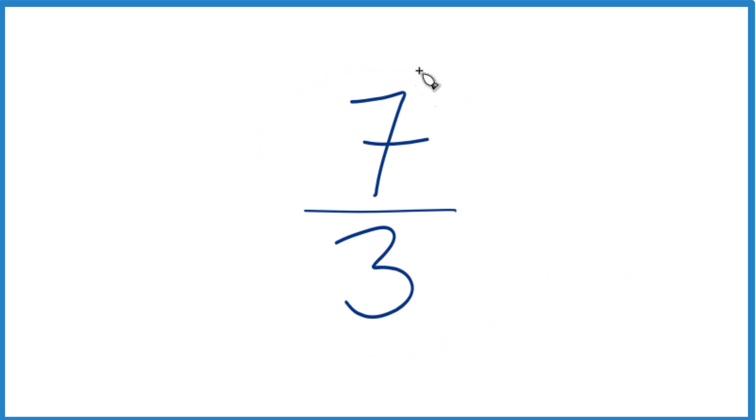So this is an improper fraction because the 7, the numerator, is larger than the denominator, 3. So we want to get it to a mixed number.